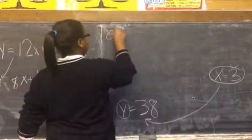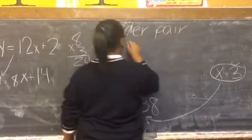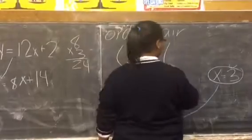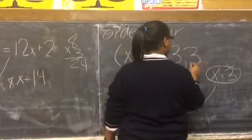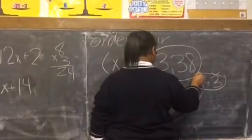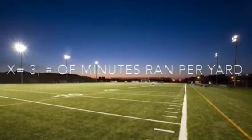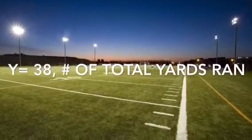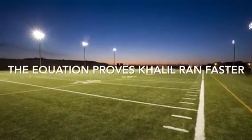Now, we have to fill in our x. The x is 3. The y is 38. This is the y. X equals 3, the number of minutes ran per yard. Y equals 38, the number of total yards ran. This equation proves that Kahlil ran faster.